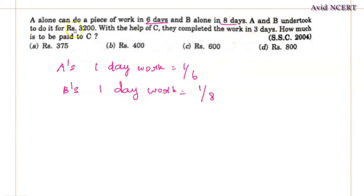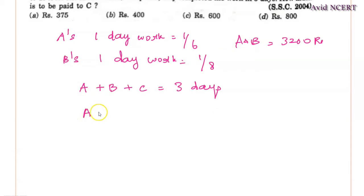A and B undertook to do it for Rs. 3,200. So A and B took it for Rs. 3,200. With the help of C, they completed the work in 3 days, which means A plus B plus C completed the work in 3 days, which is A plus B plus C's 1 day work will be equals to 1/3.